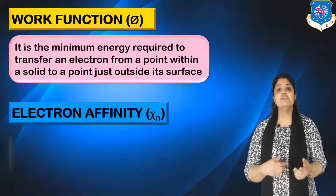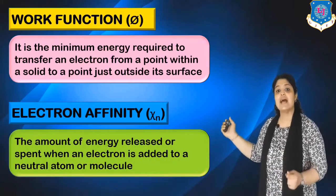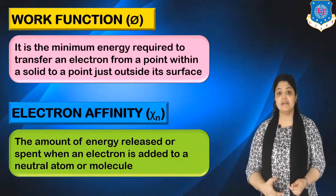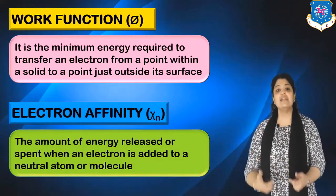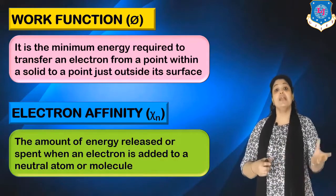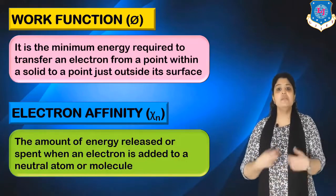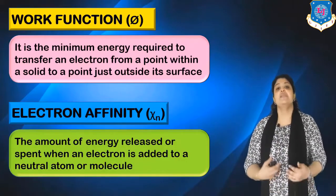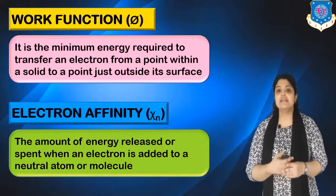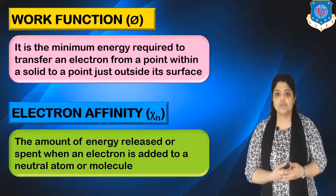The second term is electron affinity, denoted as chi n (χn). It is the amount of energy released or spent when an electron is added to a neutral atom or molecule. So basically, both terminologies — work function and electron affinity — are related to energy only.